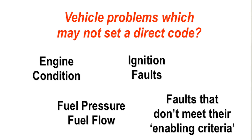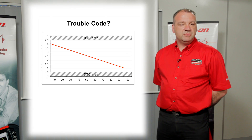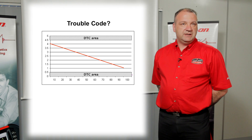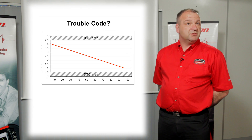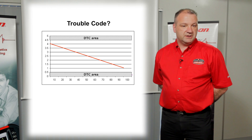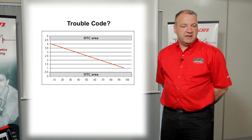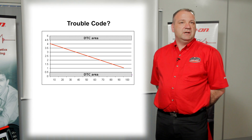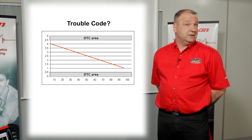Problems that do not set a trouble code could be engine condition, fuel pressure, fuel flow, ignition faults — faults that don't meet their enabling criteria. Every sensor on that engine has a maximum and minimum threshold that it works within. On the screen you can see the DTC area, which is that maximum and minimum range, and if you follow the line coming across the screen, that's how a sensor should work — at that point it's working within its enabling criteria.